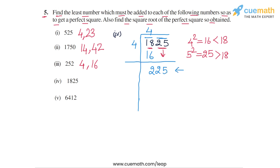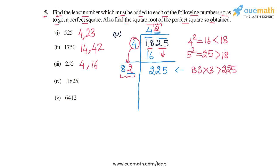For the divisor of the second step, we double 4 to get 8. We find the largest digit to place next to 8 such that the product is ≤ 225. That digit is 2, because if we had taken 3, then 83 × 3 would exceed 225. So 82 × 2 = 164. Subtracting: 225 − 164 = 61. There are no more digits, so division stops. We get a quotient of 42 and a remainder of 61.